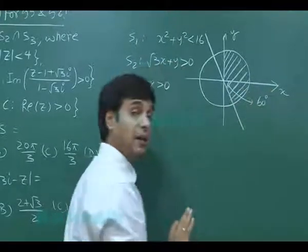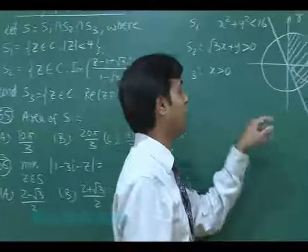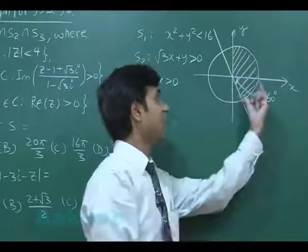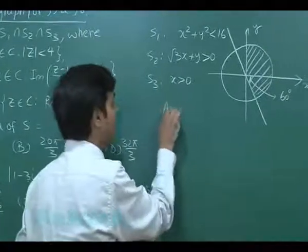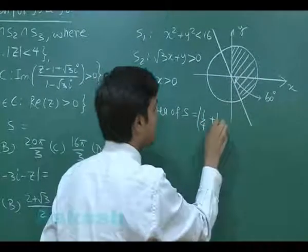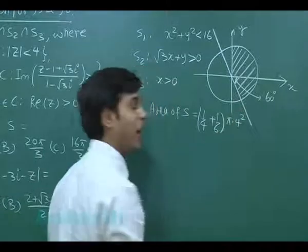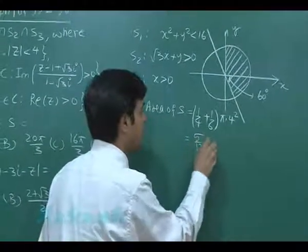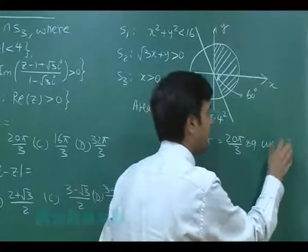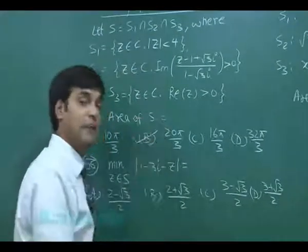The area of S is the shaded portion. One part is one-fourth of the total circle's area (from x > 0). The other part is a 60° sector, which is one-sixth of the total area. So the required area = (1/4 + 1/6) × π × 4² = (5/12) × 16π = 20π/3 square units. The correct option is B.